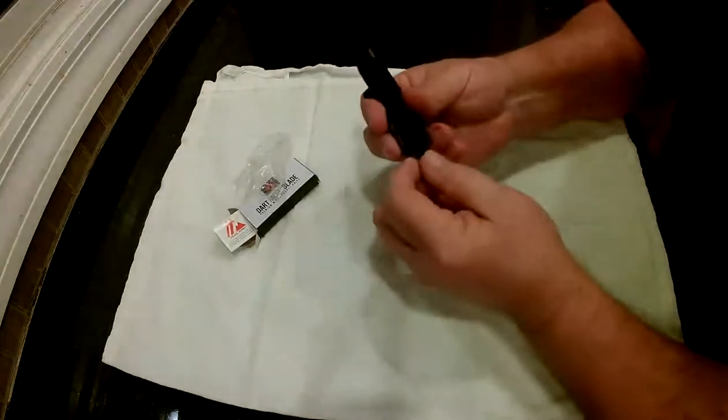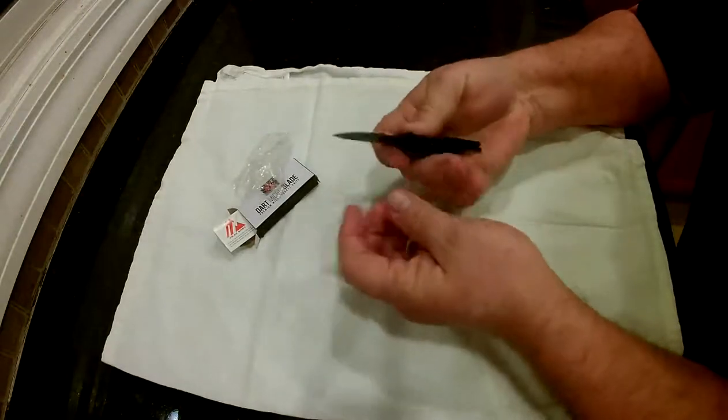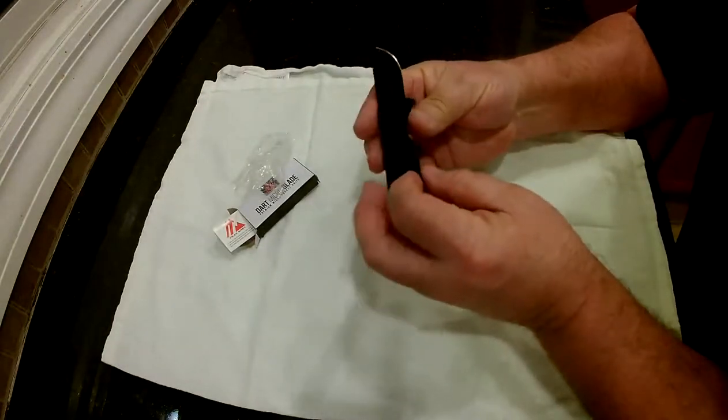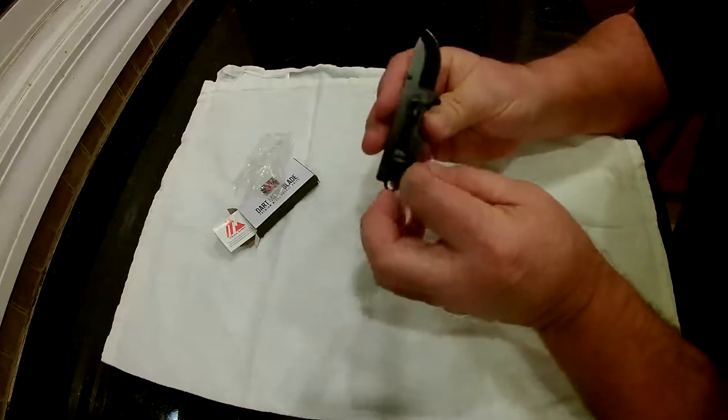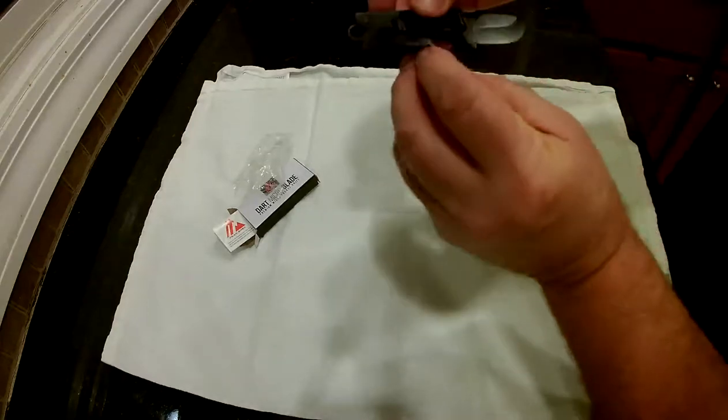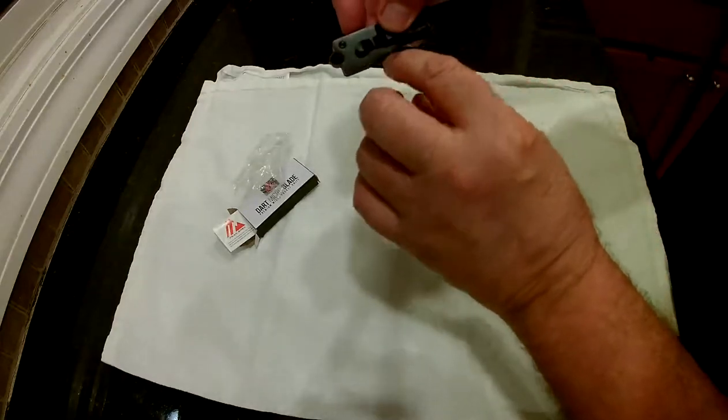This is also made to put on your key chain if you want. This does have a locking mechanism on here which is built in. It's a little hard to see, there's like a little crease here, this is almost like spring loaded here. It pops over when you open the knife.